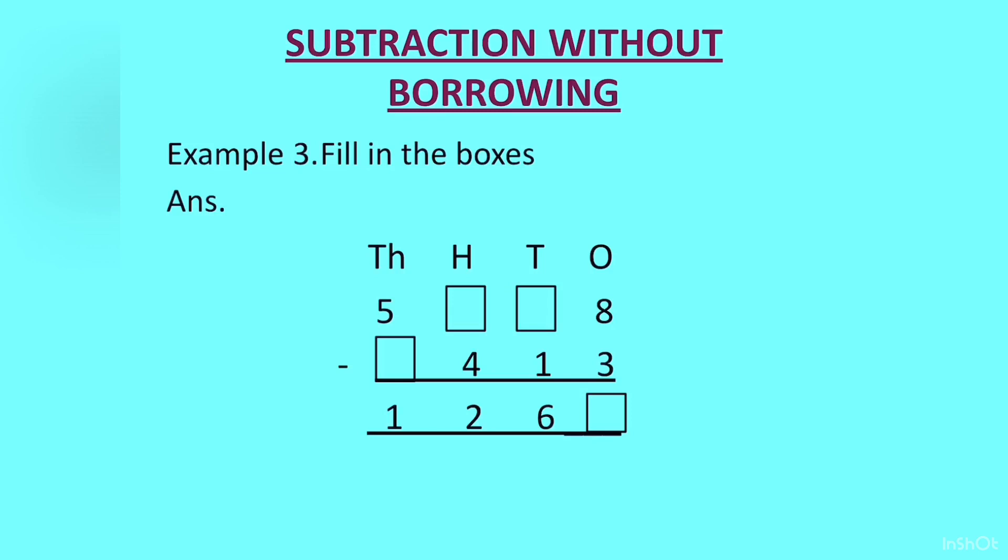Third example: fill in the boxes. Here again we will start like normal subtraction from the ones column. 8 minus 3 this will give us 5. Then we go to the tens column. We have a blank minus 1 and the answer is given to us as 6. So from what we will minus 1 so that we get 6? For this we will add this 1 and 6. 6 plus 1 is 7. So here we will get 7.